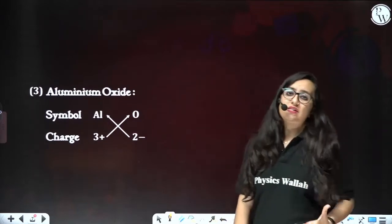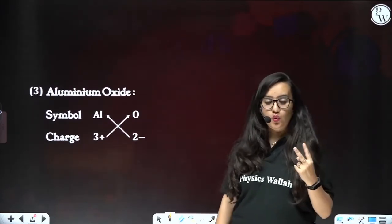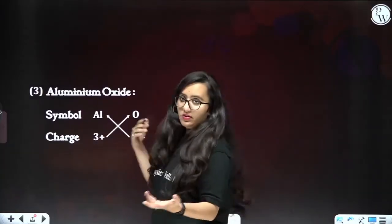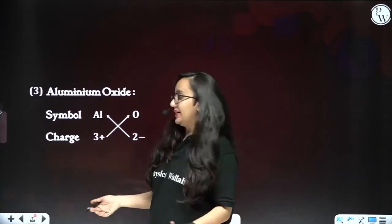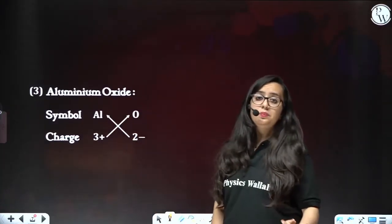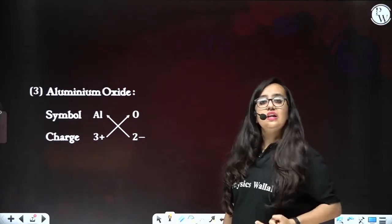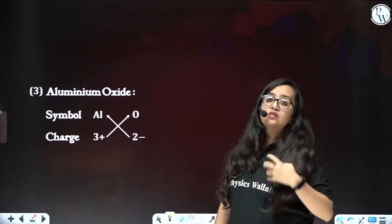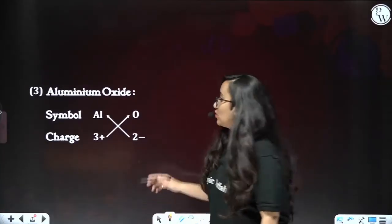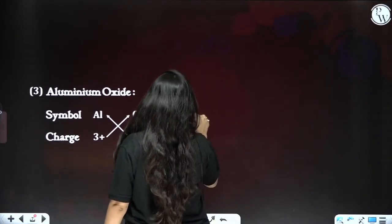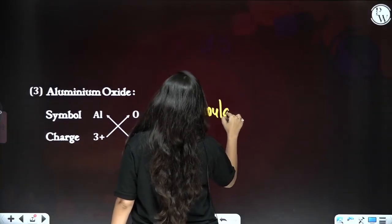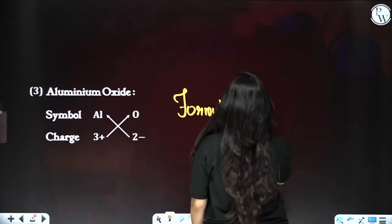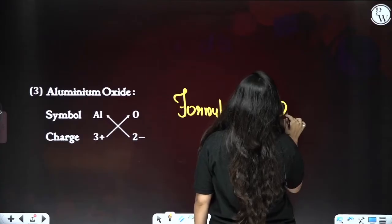Next is aluminium oxide. The two elements are aluminium and oxygen. For aluminium the valency is 3⁺ — it gives away three electrons. For oxide it is 2⁻ — it takes two electrons. We criss-cross multiply: two goes with aluminium and three goes with oxygen, so the formula becomes Al₂O₃.